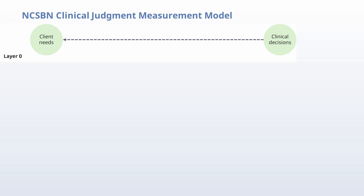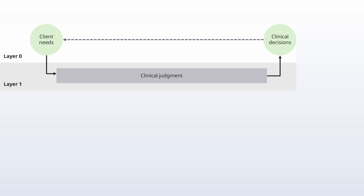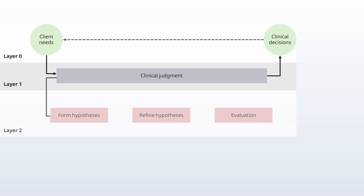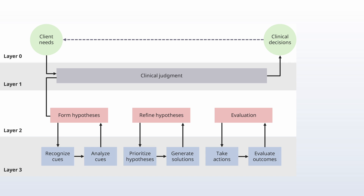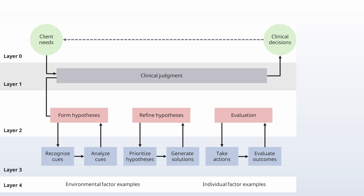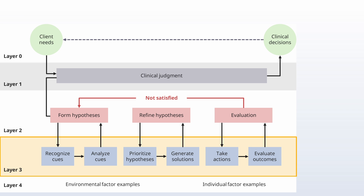Layer zero thinks about the client needs and client decisions. Layer one is clinical judgment, and that's where you're going to really start to use your critical thinking. In the second layer, you form your hypothesis, refine it, and evaluate it. That third layer — where you're recognizing cues, analyzing cues, prioritizing your hypothesis, generating solutions, taking actions, and evaluating them — is where the majority of the exam questions are going to come from. That fourth and final layer covers environmental and other examples. We're going to focus in on layer three.